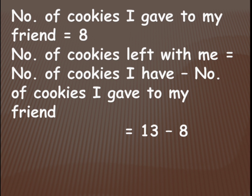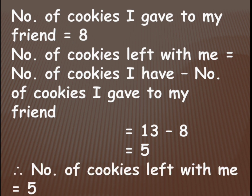Keep 8 in your mind and count up till 13: 9, 10, 11, 12, 13 — that's 5 fingers open. So number of cookies left with me is equal to 5. Therefore, number of cookies left with me is equal to 5.